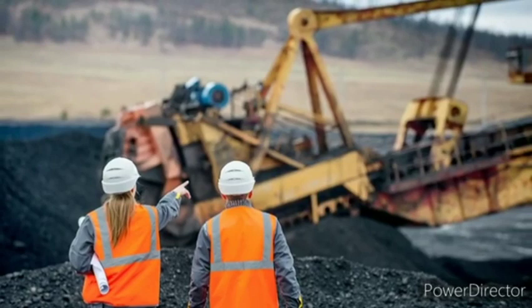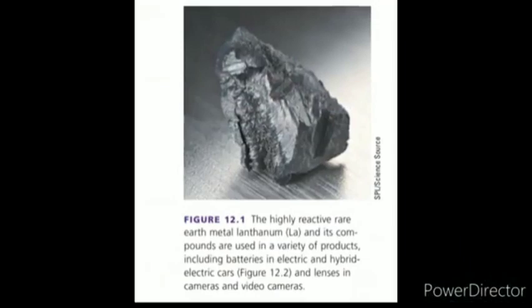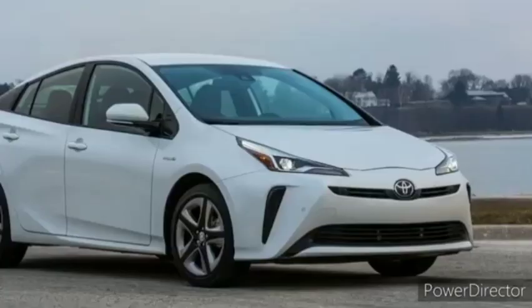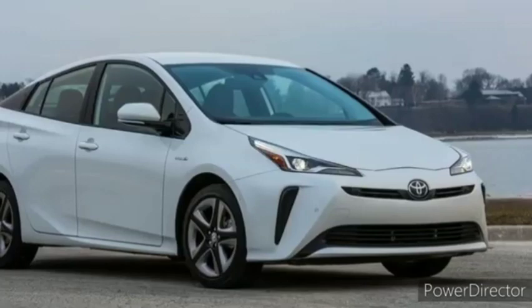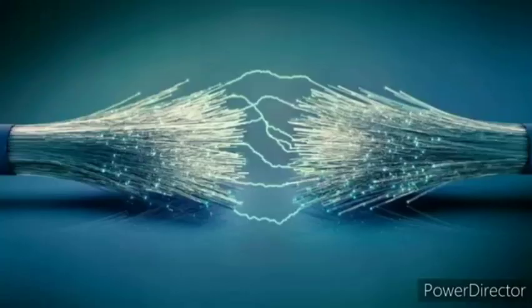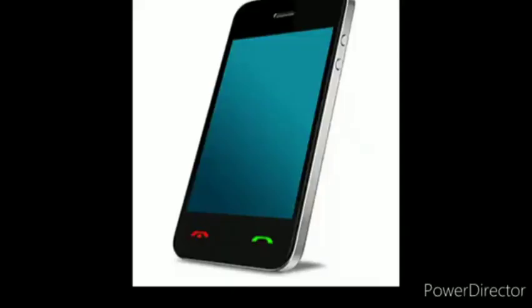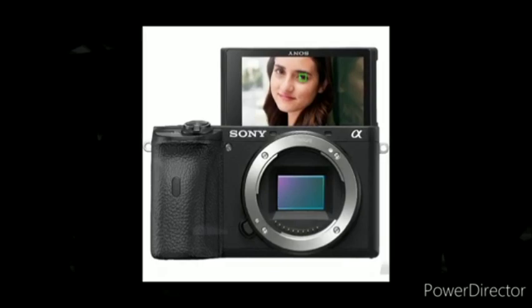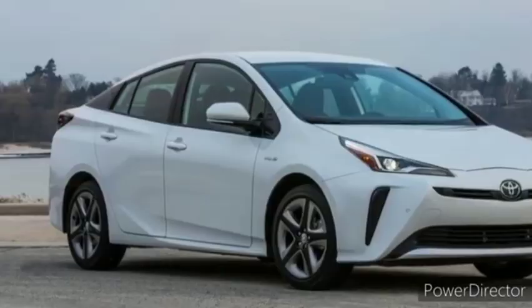A highly reactive rare earth metal and its compounds are used in a variety of products including batteries in electric and hybrid electric cars, lenses in cameras and video cameras. Rare earths are used to make liquid crystal display flat screens for computers and television sets, energy-efficient compact fluorescent LED light bulbs, solar cells, fiber optic cable, cell phones, and digital cameras. They are also important in the manufacture of batteries and motors for electric and hybrid cars.